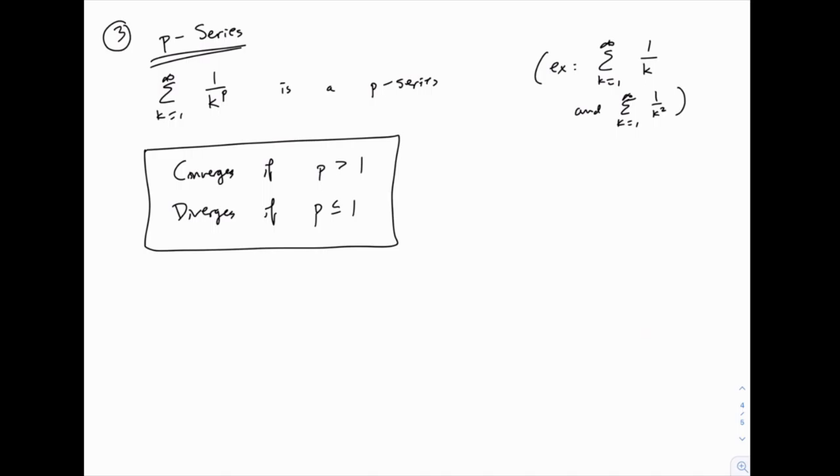In the second case, with 1 over k squared, p is greater than 1, since it equals 2, so it converges. So notice the form very carefully. It's 1 over k to the power of p. And so we can write down a few examples, and even things that don't initially look like that form, we can write often in that form.